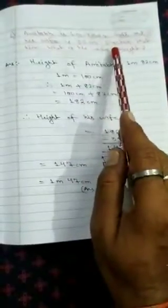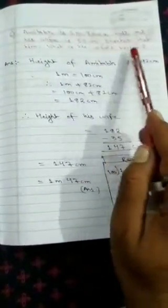Number 6. Amitabh is 1.82 meters tall and his wife is 35 centimeters shorter than him. What is his wife's height?